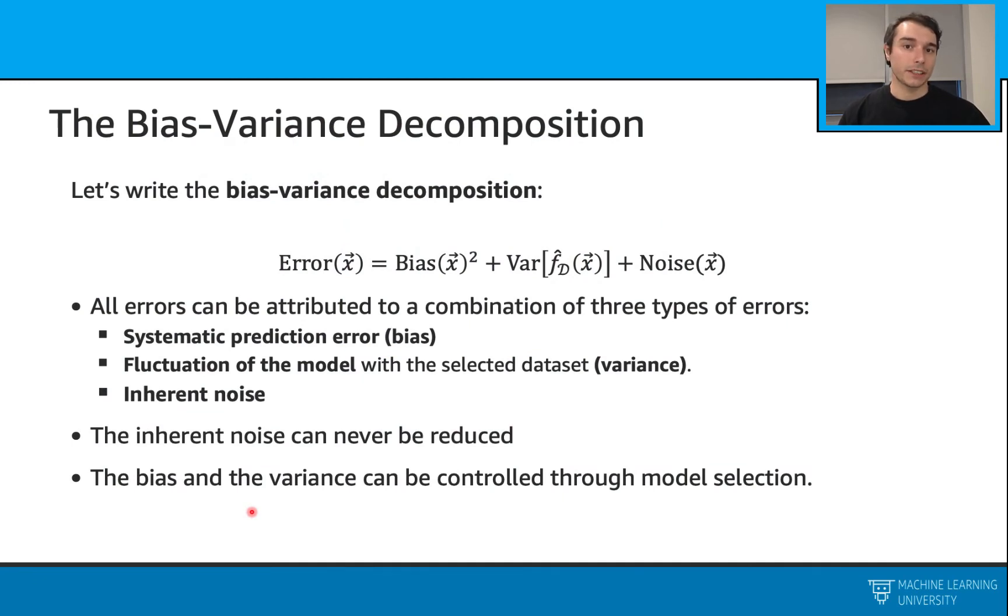Hi, everyone. In this section, we will look at this bias-variance decomposition topic, and we will also make mathematical derivation of this. As you remember, we have our error in terms of bias squared plus variance and noise. In these terms, the noise term cannot be reduced. But the good news is that we can change the bias and variance through our model selection, and if we make some good choices, we can overall reduce our errors.